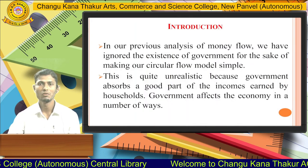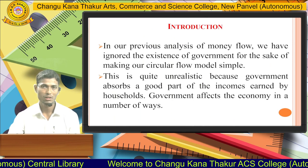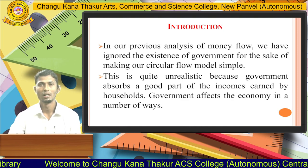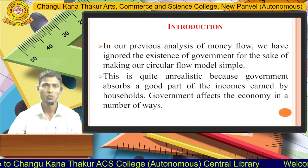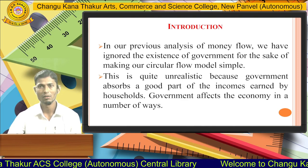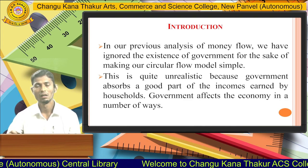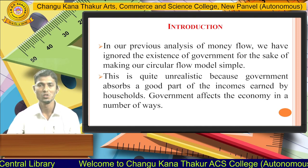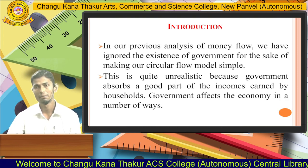In our previous discussion we have seen the two-sector closed economy. Initially we saw households were not saving, and in the second scenario households were saving, with those savings going towards financial markets or financial institutions and then towards firms in the form of investment. So the saving and investment model was the second model we covered.